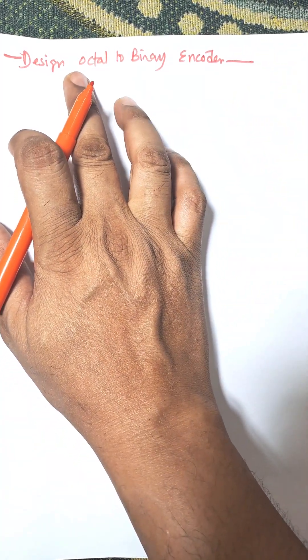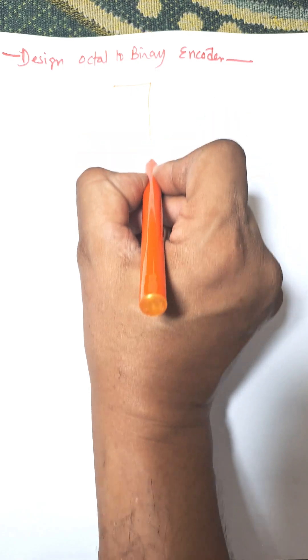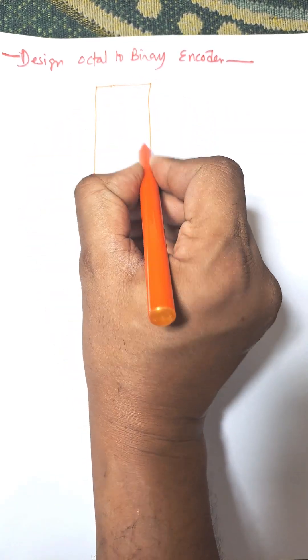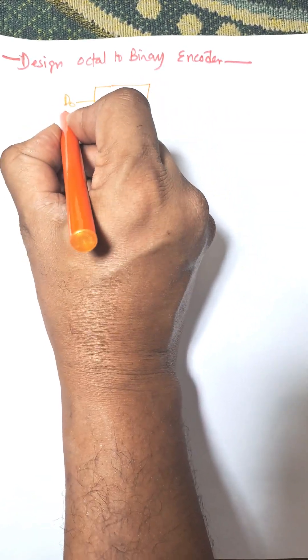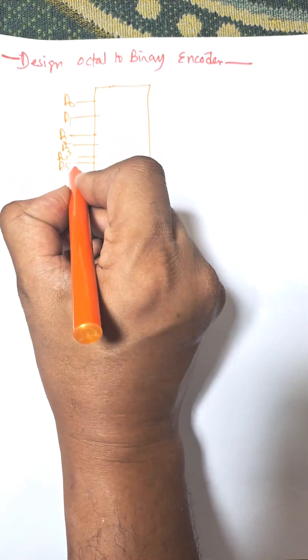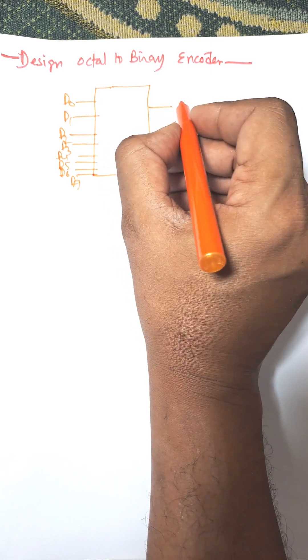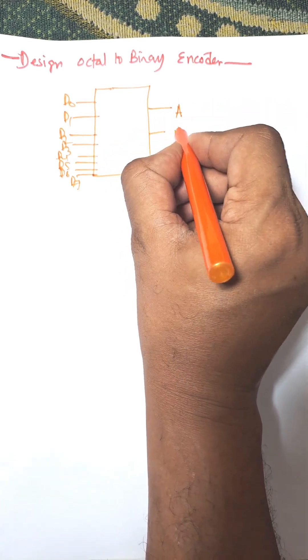Hi everybody, in this video I am going to design an octal-to-binary encoder. An octal-to-binary encoder has eight inputs: d0, d1, d2, d3, d4, d5, d6, and d7. These are the inputs and there will be three outputs: a, b, and c.